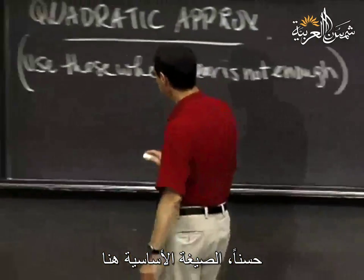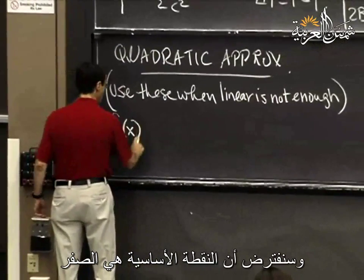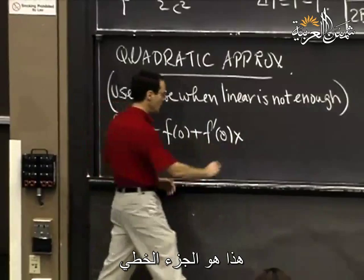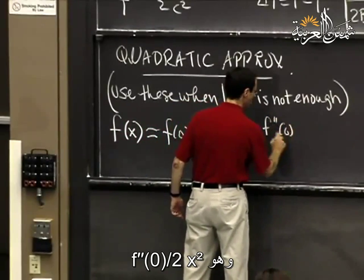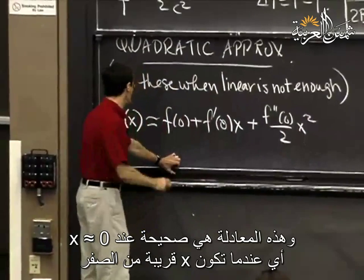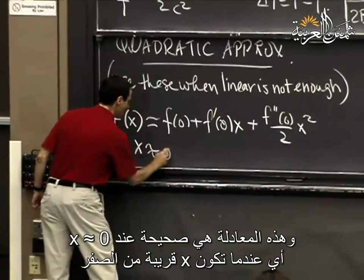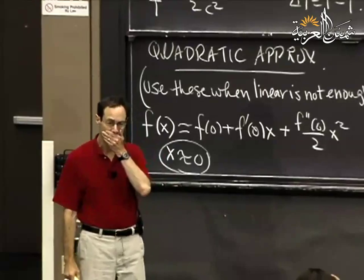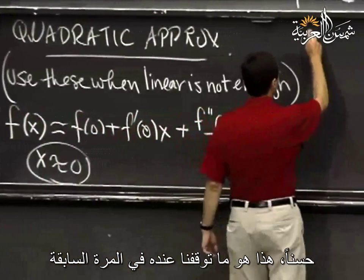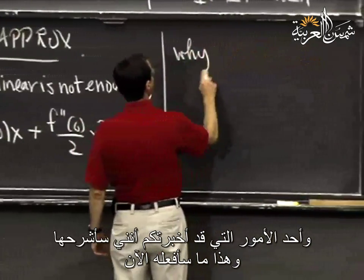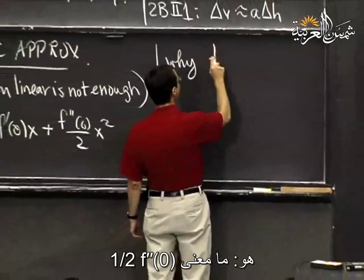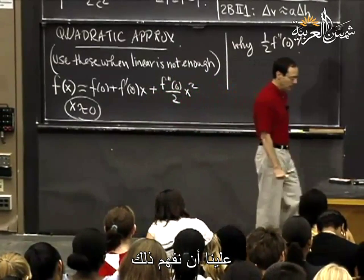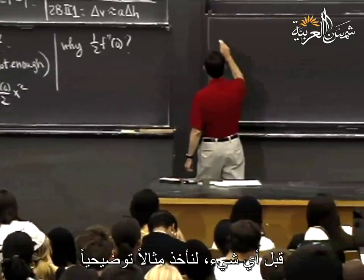The basic formula, taking the base point to be 0, is: f(x) ≈ f(0) + f'(0)·x + (f''(0)/2)·x². This is supposed to work for x near 0. I want to explain why it's one-half f double prime of 0.